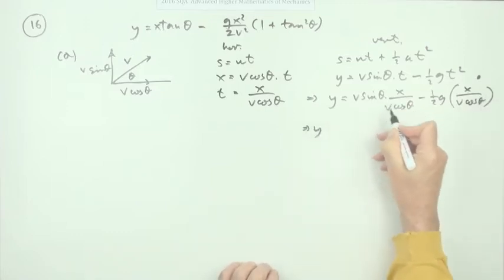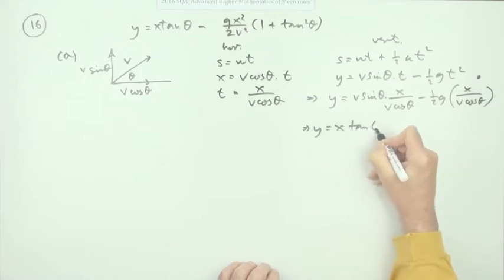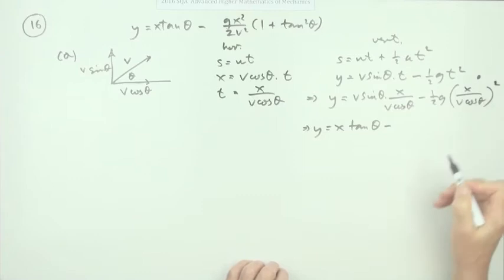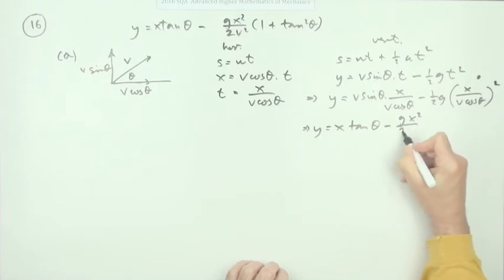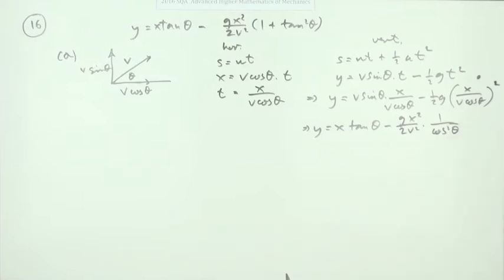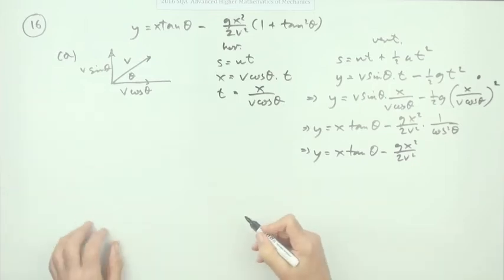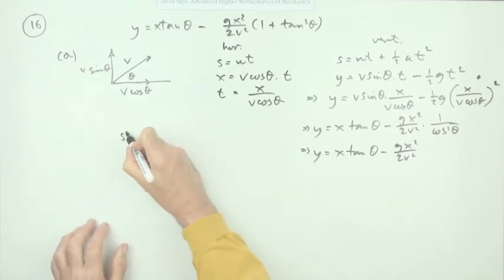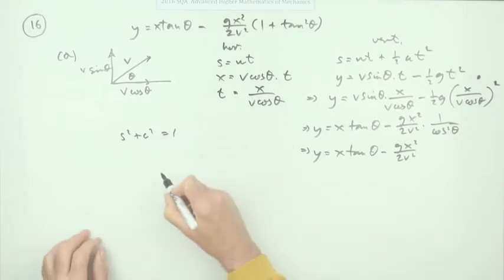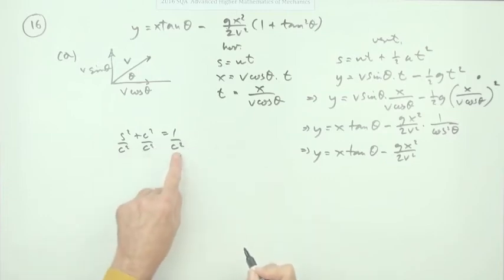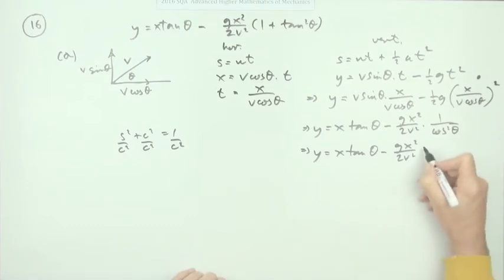The V's cancel, sine over cos is tan, so that's x tan theta minus, putting the squared in, we've got g and x squared, underneath there's two and V squared but also times one over cos squared theta. But that can be replaced. Sine squared plus cos squared is one, so one over cos squared equals tan squared plus one.